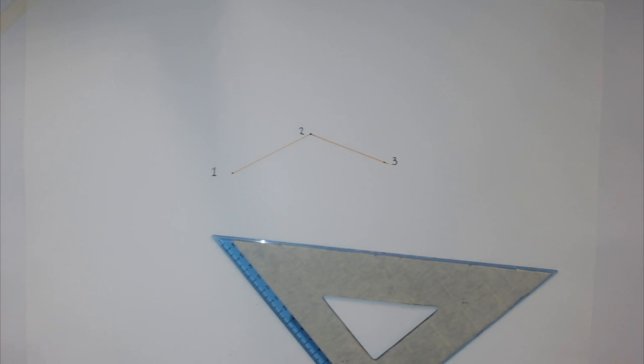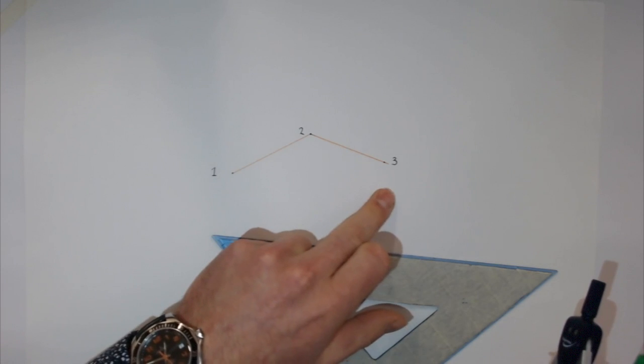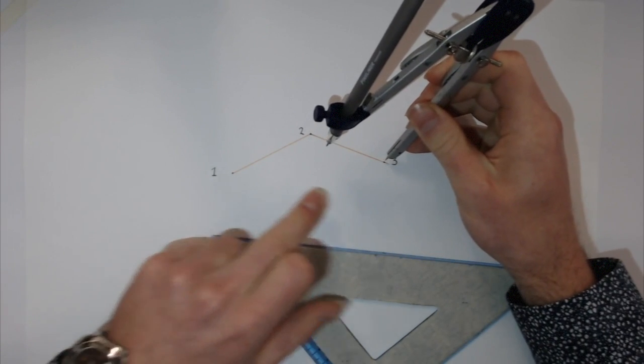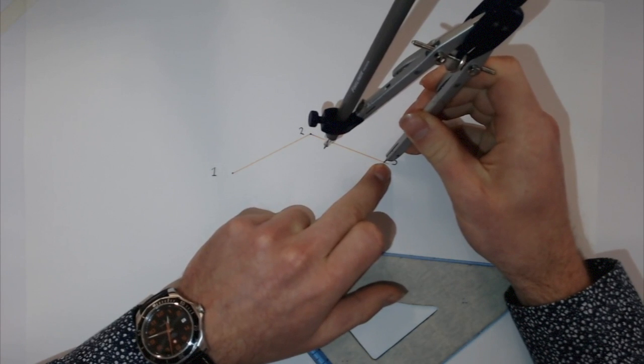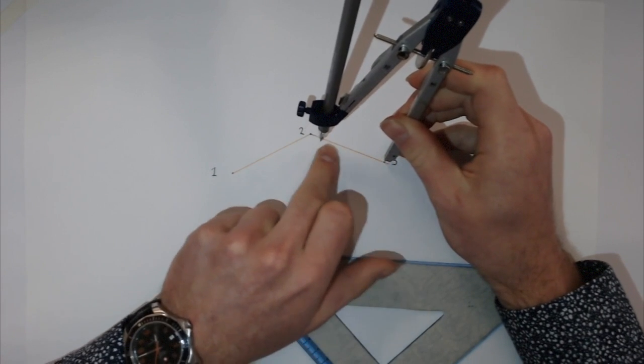Next, take the compass and bisect all of these lines. To do that, place the compass on point three and make sure it's more than halfway through the line.